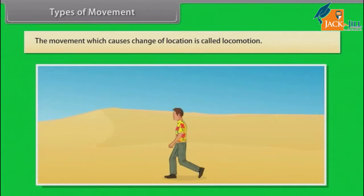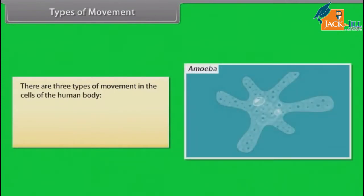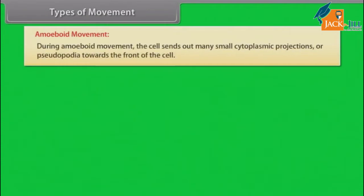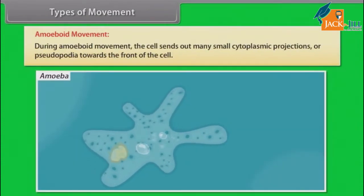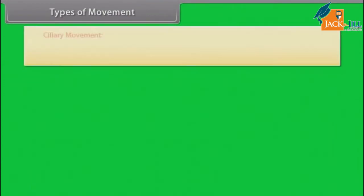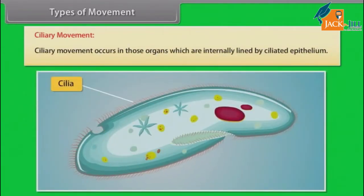The movement which causes change of location is called locomotion. There are three types of movements in the cells of the human body: amoeboid, ciliary, and muscular. During amoeboid movement, the cell sends out many small cytoplasmic projections or pseudopodia towards the front of the cell. Ciliary movement occurs in those organs which are internally lined by ciliated epithelium.